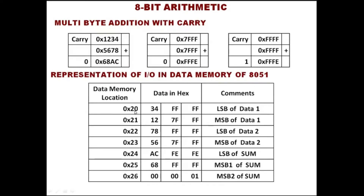34 has to be stored in location 20, 12 in location 21, 78 in location 22, 56 in location 23 — LSB of data 1, MSB of data 1, LSB of data 2, MSB of data 2 in the first four locations, LSB first and MSB next. The number is 8-bit but the content is 16-bit. The answer is stored in locations 24, 25, and 26 — LSB of sum, MSB1 of sum, and MSB2 of sum — because when adding two 16-bit numbers the answer may go beyond 16 bits, so we allocate 3 locations.